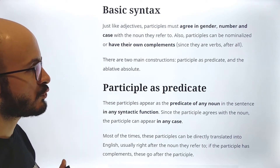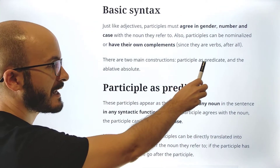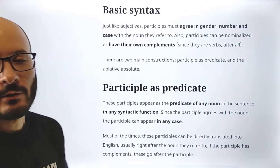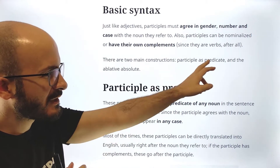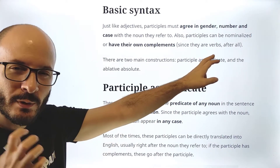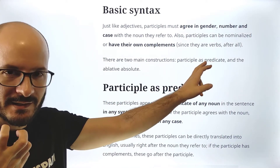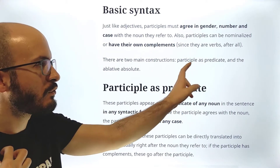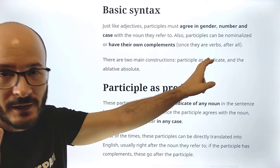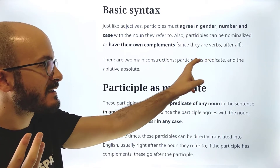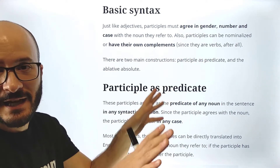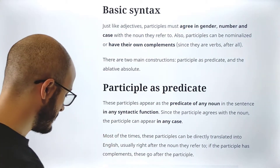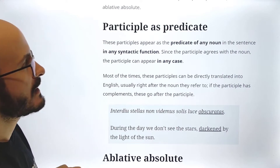There are two main constructions: participle as predicate and the ablative absolute. Small disclaimer: 'participle as predicate' — I couldn't really find the name for this in English, so this is my best translation. If you find something else somewhere else, it is probably better than this, but it is just a name, just a tag.